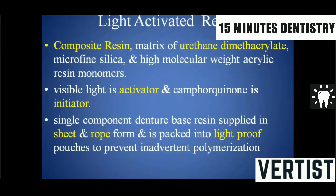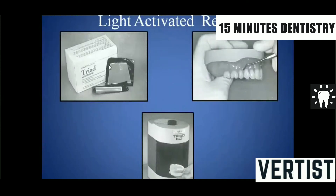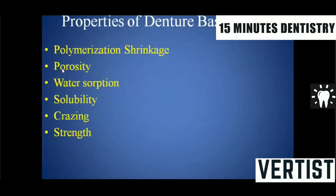Light-activated resin is a single-component denture base resin supplied as sheets or rope, packed in light-proof pouches to prevent inadvertent polymerization. It cannot be flasked in a conventional manner like heat-activated or self-cure resin. Instead, teeth are arranged on the denture base, molded accurately on the cast, and then the denture base is exposed to high-intensity visible light in a light-curing chamber for an appropriate period to achieve polymerization.